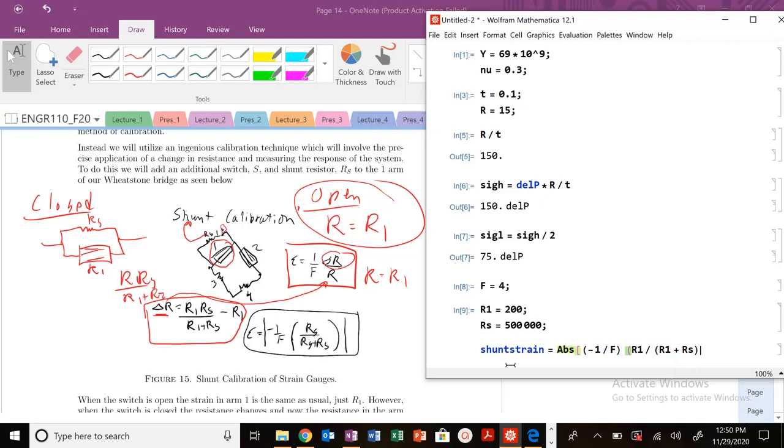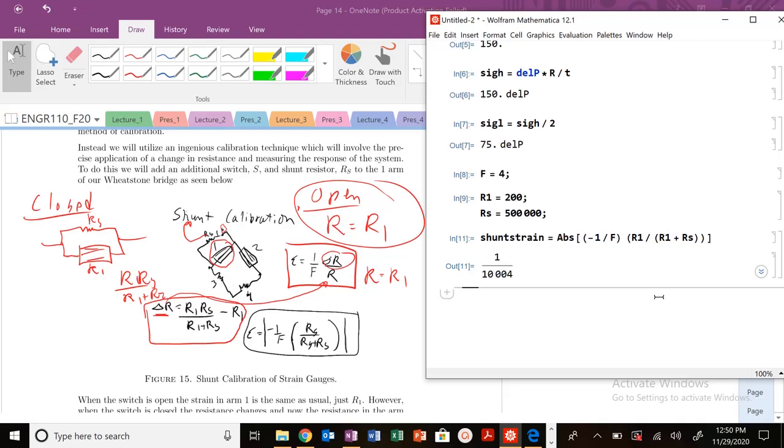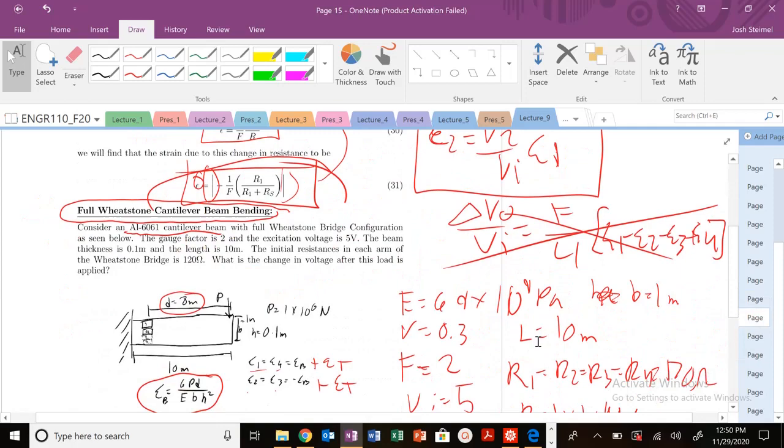That is going to be that shunt resistance. At that value, once I close that switch, that is going to be the strain from that change in resistance.